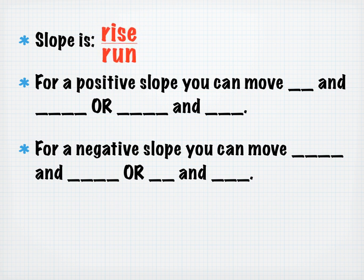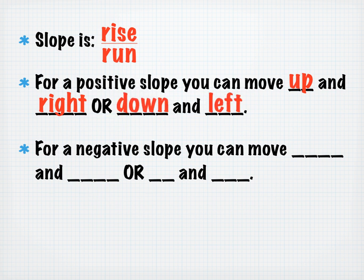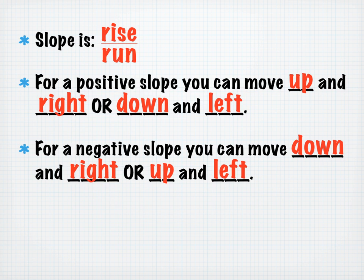Slope is rise over run. For a positive slope, move up and to the right, or equivalently down and to the left (negative over negative equals positive). For a negative slope, move down and right (negative over positive) or up and to the left (positive over negative) — both yield a negative slope.